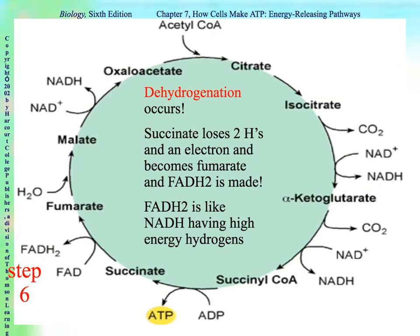In step six, we have dehydrogenation — the removal of hydrogens. Succinate, which is four carbons, is going to lose two hydrogens and an electron and become fumarate. Those hydrogens that come off are going to be added to FAD to make FADH2. FAD is similar to NAD+, and FADH2 is like NADH — it has those high-energy hydrogens that will be used in the next step.